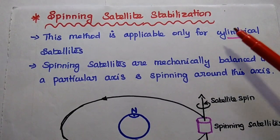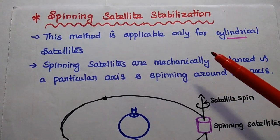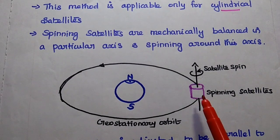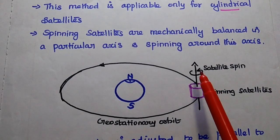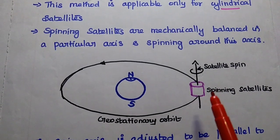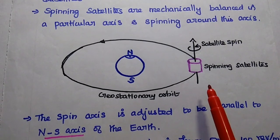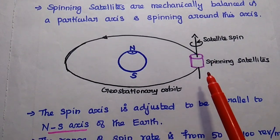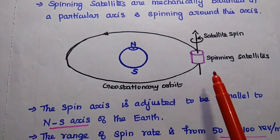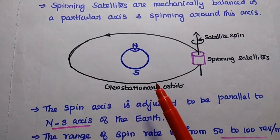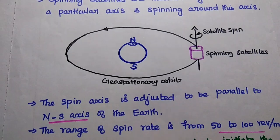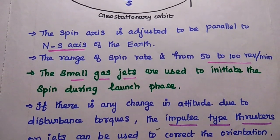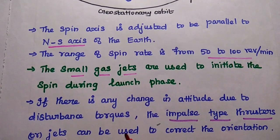The spinning satellite stabilization method is applicable only for cylindrical satellites, known as spinning satellites. These satellites are mechanically balanced about a particular axis and spin around that axis. The spin axis is adjusted to be parallel to the north-south axis of the Earth, with a spin rate ranging from 50 to 100 revolutions per minute. During the launch phase, small gas jets are used to initiate the spin.